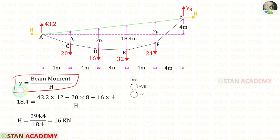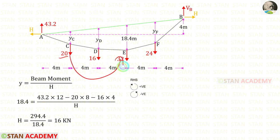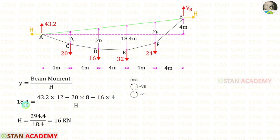We know that Y is equal to beam moment upon horizontal thrust H. At point E, we know the value of Y which is 18.4. Let us find the beam moment at E. 43.2 is acting clockwise with distance 12, positive. The loads are acting anti-clockwise with distances 8 and 4, negative. Taking H to the left side and the moment value to the denominator, for H we will get 16 kilo Newton.